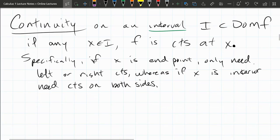And if you have an endpoint, meaning if your interval was closed, you just have to check left or right continuous if you're testing one of these two endpoints.